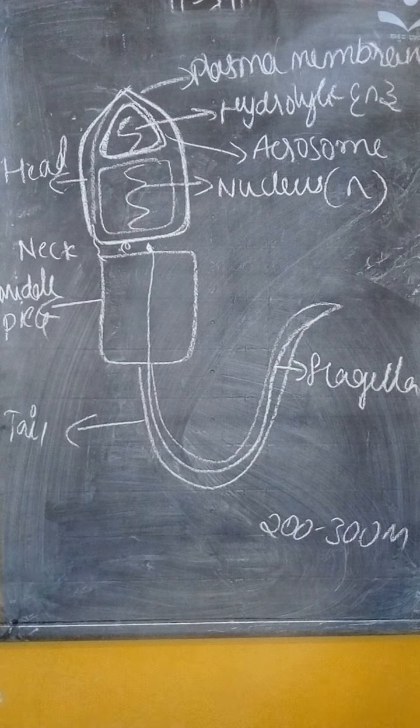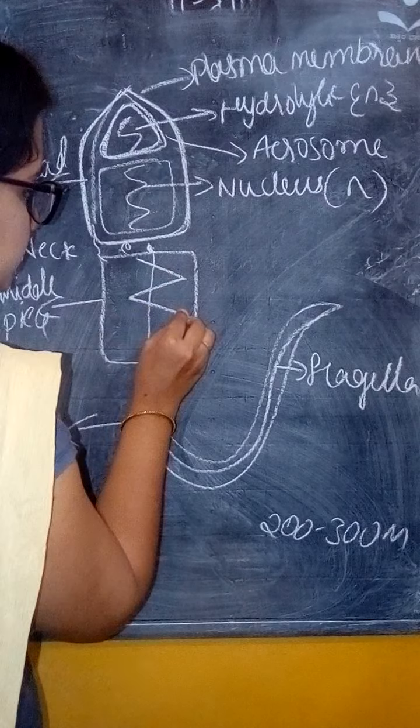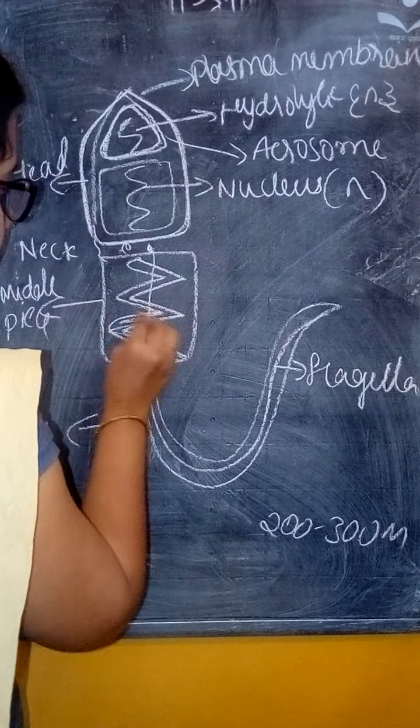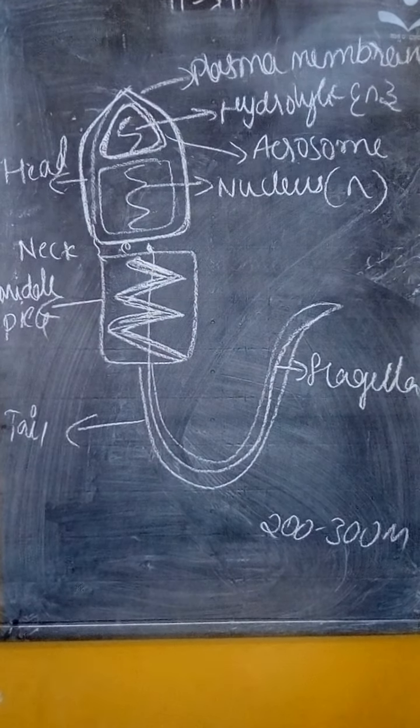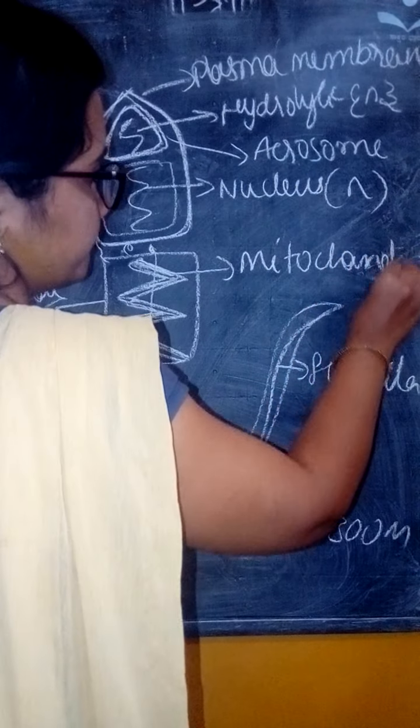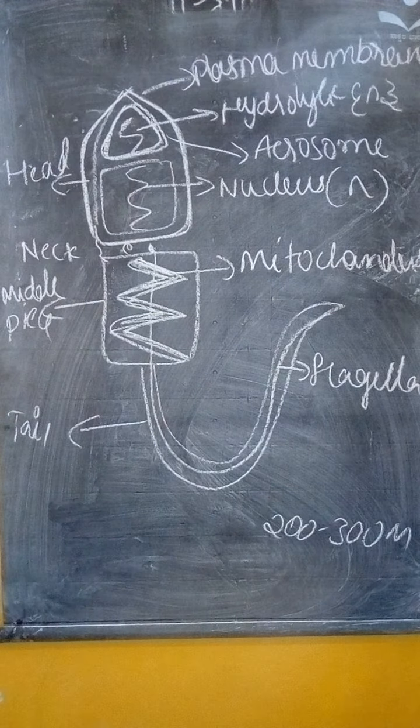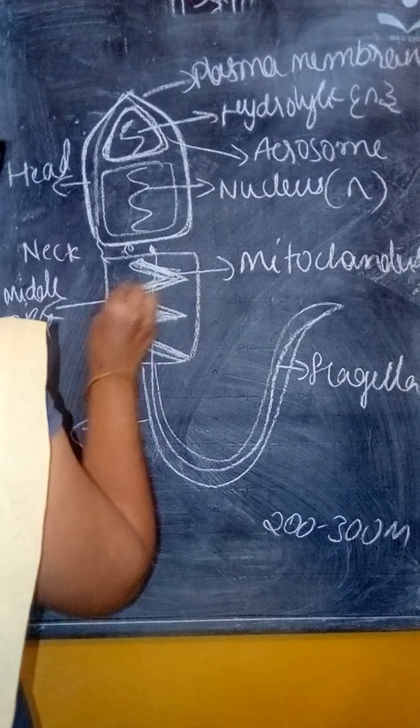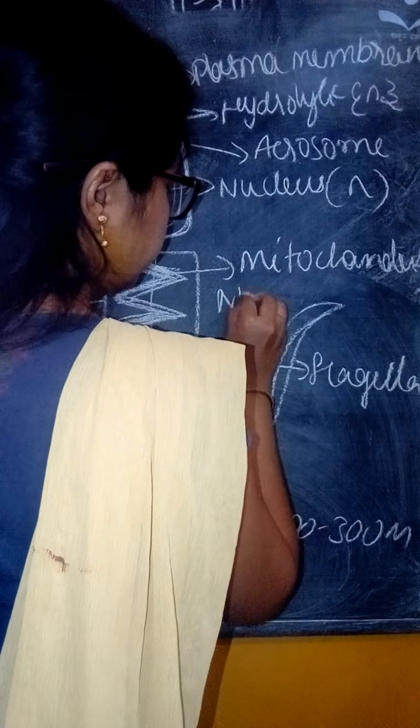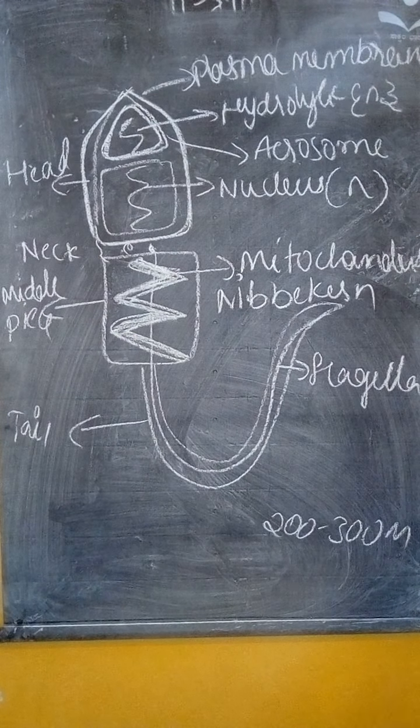Next is the middle piece. The middle piece contains this type of structure - that is mitochondria. As you know, maximum ATP is formed from the mitochondria. This type of structure, this pattern, is called the nebenkern.